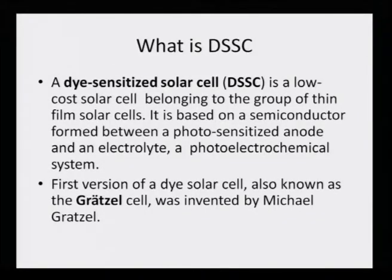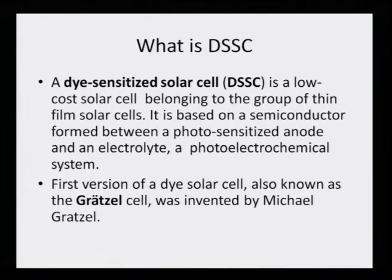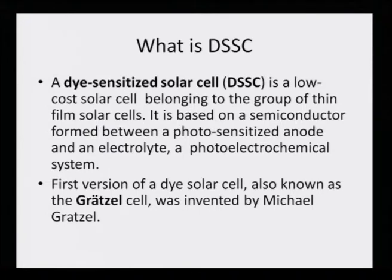A dye sensitized solar cell is a low cost solar cell belonging to the group of thin film solar cells. It is based on a semiconductor formed between a photosensitized anode and an electrolyte — a photo electrochemical system. It must have a thin film of solar cells made up of a semiconductor material which should have a photosensitized anode and there should be an electrolyte to carry out the photo electrochemical reaction.